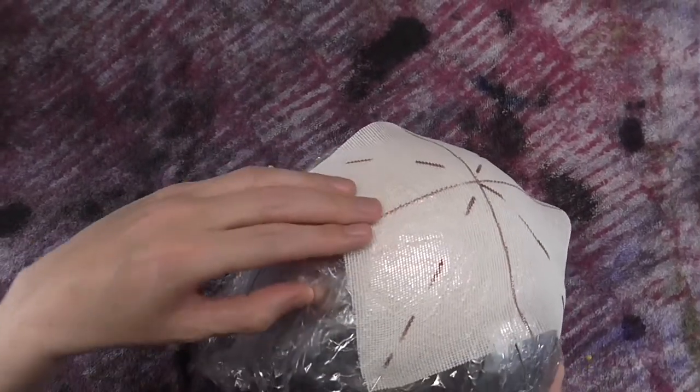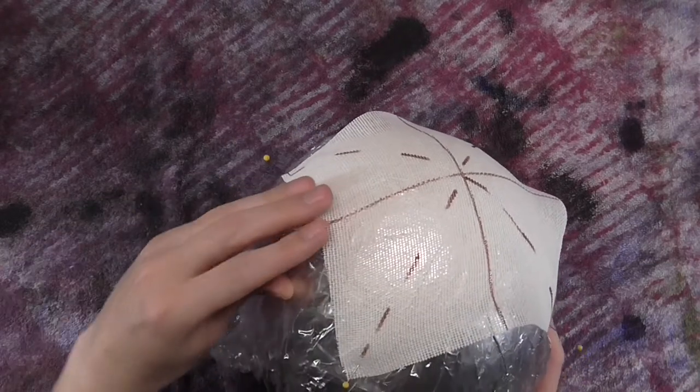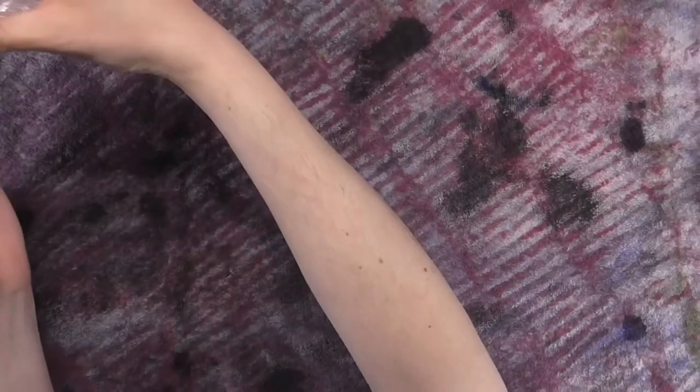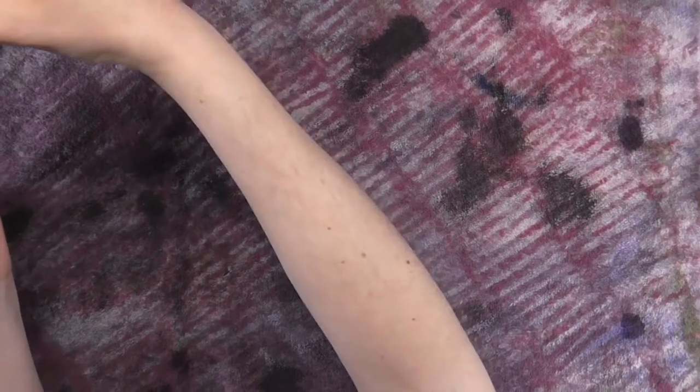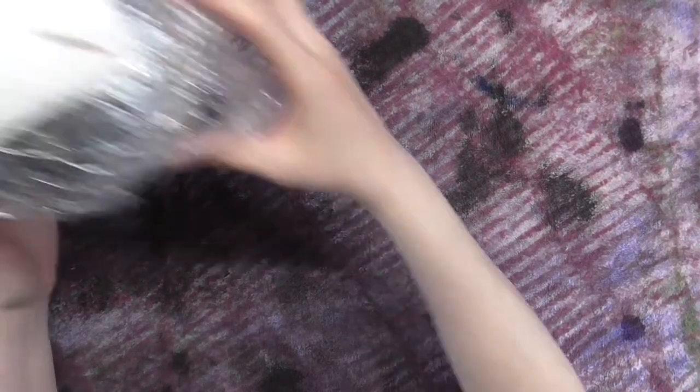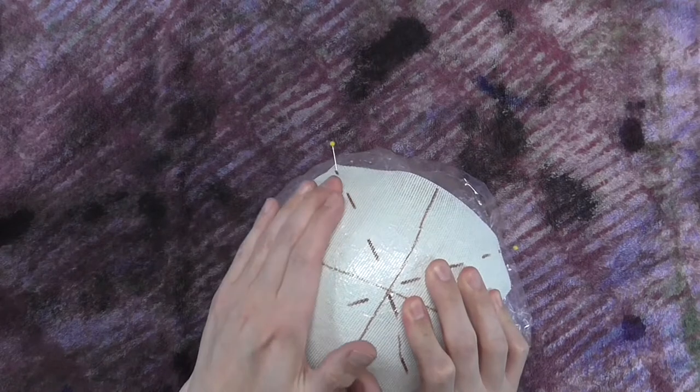Now we are going to flatten the middle sections around the ball. Once again, steam the edges until soft. Then smooth down over the ball and pin. Repeat for the remaining 3 edges.